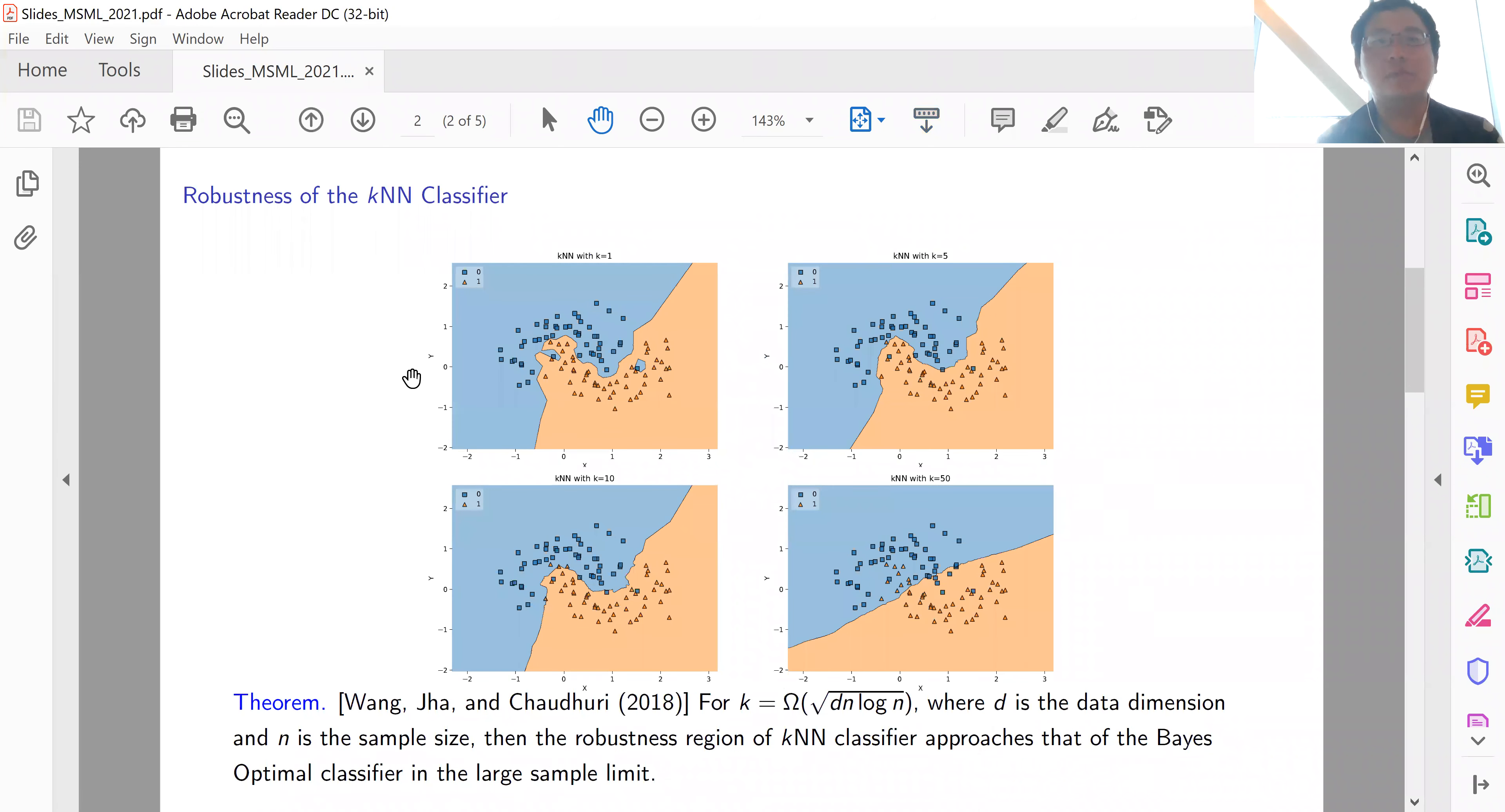Let's start by considering the simplest k-nearest neighbor classifier. We look at the decision boundary of the k-nearest neighbor classifier for different numbers of nearest neighbors involved in the prediction. We see that as the number of nearest neighbors increases, the decision boundary becomes more and more smooth. For very small numbers of nearest neighbors, for instance when k equals one, we see that a small perturbation on the data can fool the classifier.